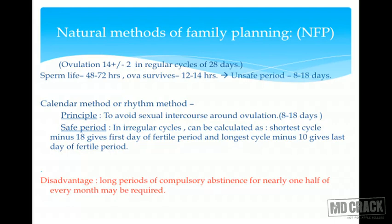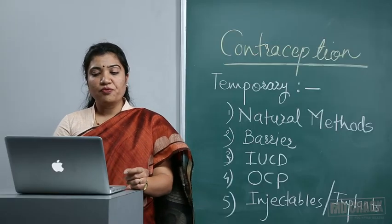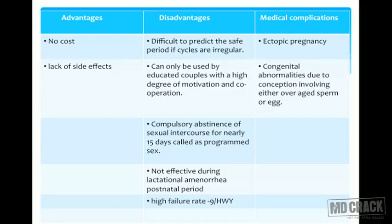The calendar method involves avoiding intercourse around ovulation — the fertile period in a 28-day cycle is considered days 8 to 18. For irregular cycles, the formula is: shortest cycle minus 18 gives the first day of the fertile period, and longest cycle minus 10 gives the last day. Disadvantages include compulsory abstinence, difficulty predicting safe periods with irregular cycles, and it can only be used by educated, highly motivated couples.